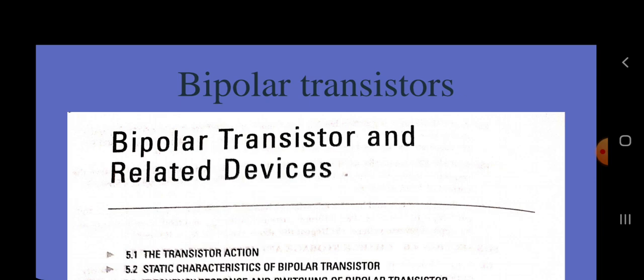The bipolar transistor was invented by a research team at Bell Laboratories in 1947. The device had two metal wires with sharp points making contact with a germanium substrate. The first transistor was primitive by today's standard, yet it revolutionized the electronics industry and changed our way of life. The modern bipolar transistors have replaced germanium with silicon and replaced the point contacts with two closely coupled PN junctions in the form of PNP or NPN structures.